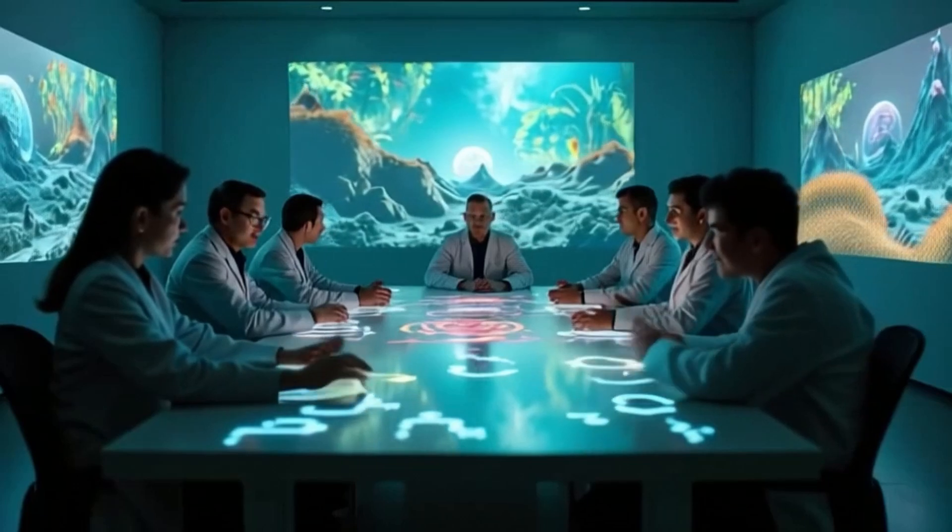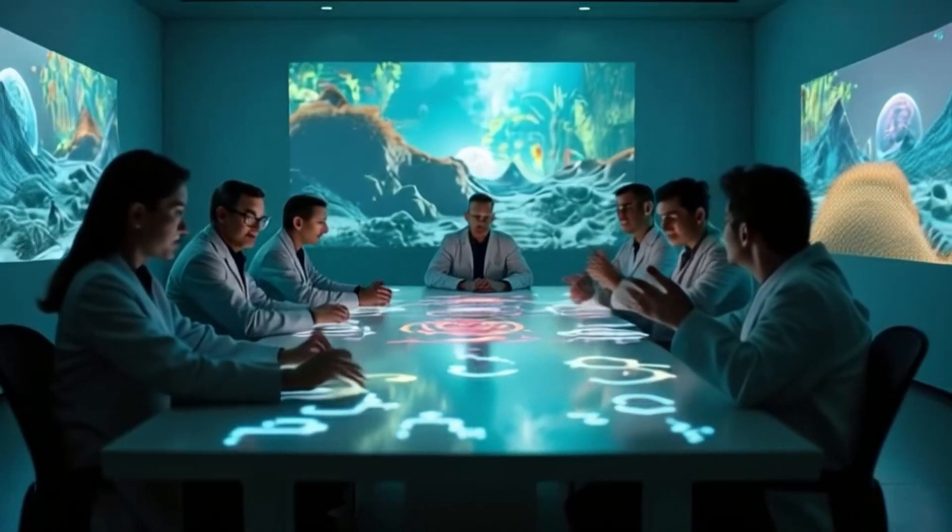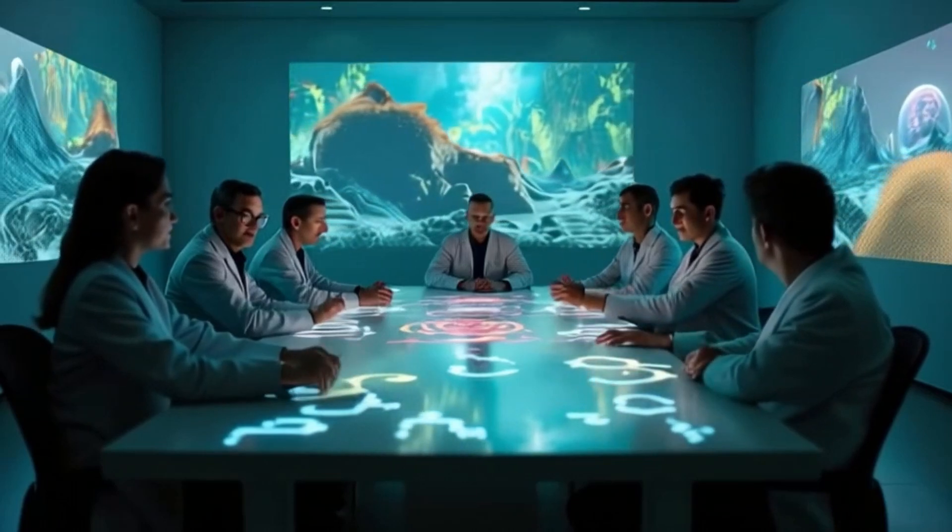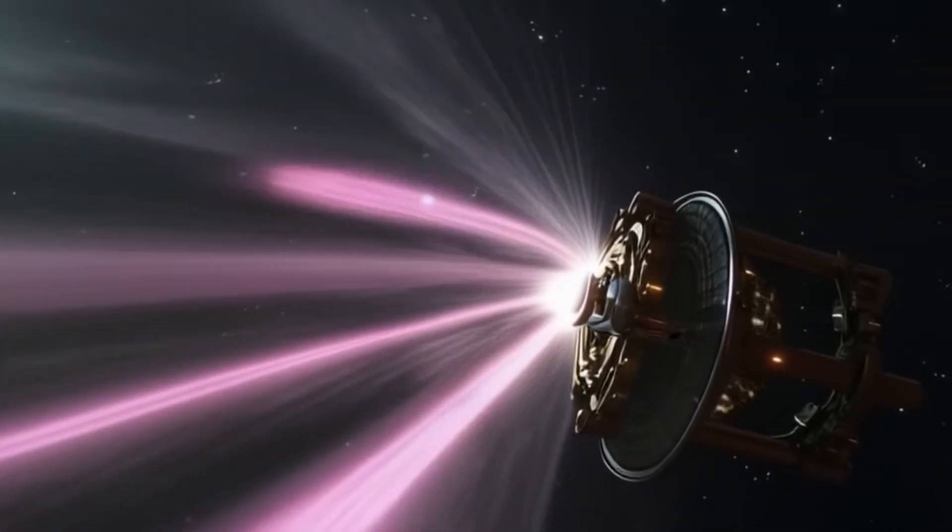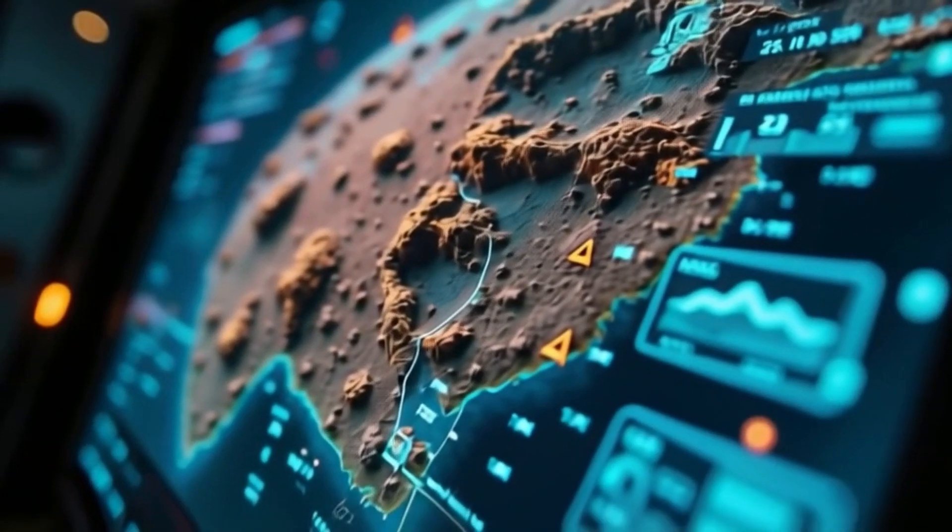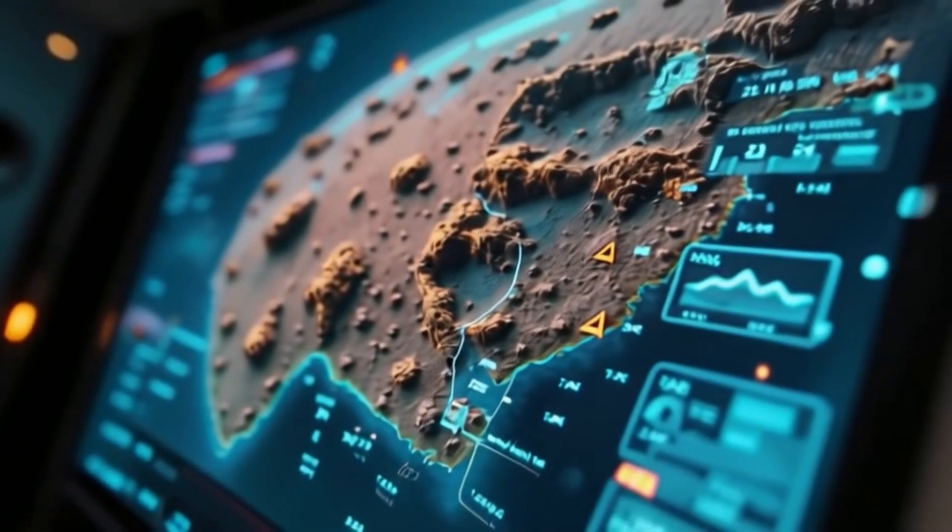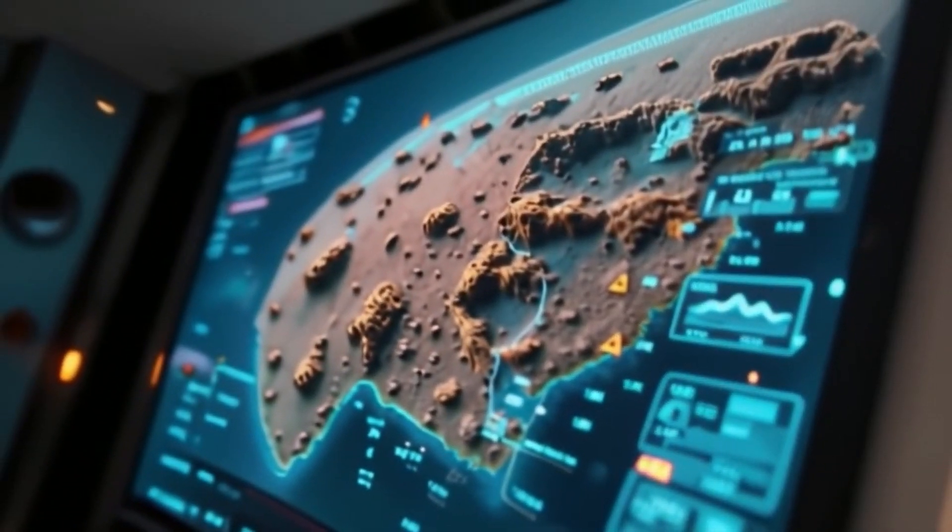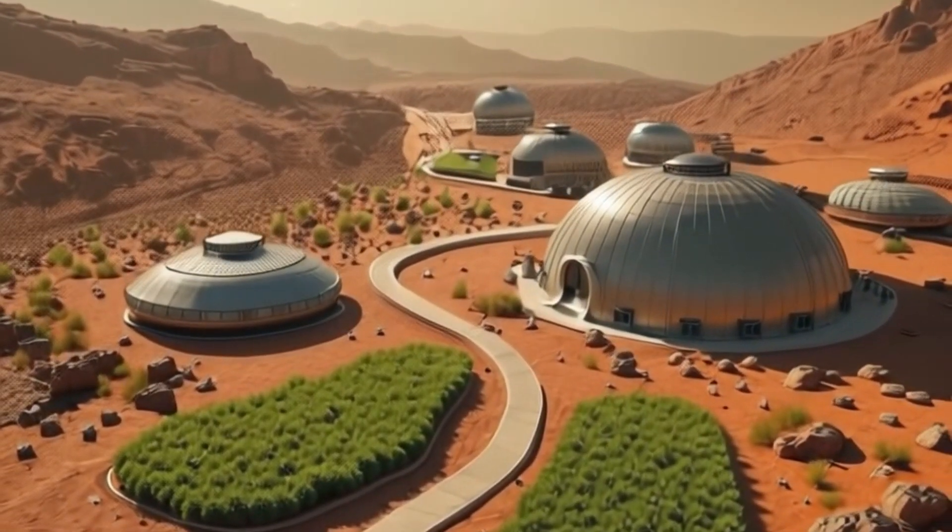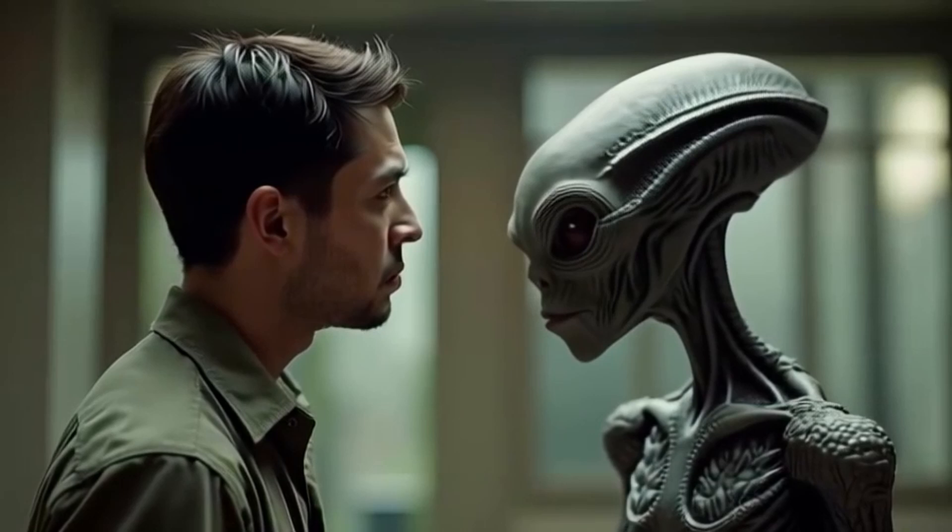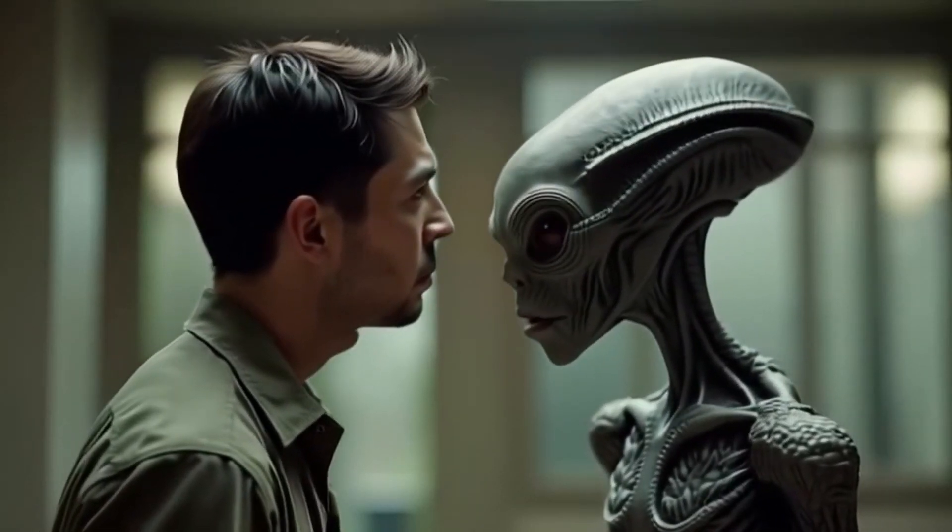The discovery of alien ecosystems raises ethical questions. Should we interfere with extraterrestrial life, or leave it undisturbed? Making contact with alien life poses challenges. Should we communicate, or might our presence threaten unknown ecosystems? AI will play a crucial role in managing data and making decisions in unknown environments during deeper space exploration. Colonizing planets or moons will require sustainable practices, from self-sustaining ecosystems to ensuring long-term colony survival. The discovery of alien life would profoundly affect humanity. How would we react to knowing we are not alone in the universe? Will we co-exist with alien ecosystems, or could the discovery of intelligent life lead to conflict? The possibilities are endless.